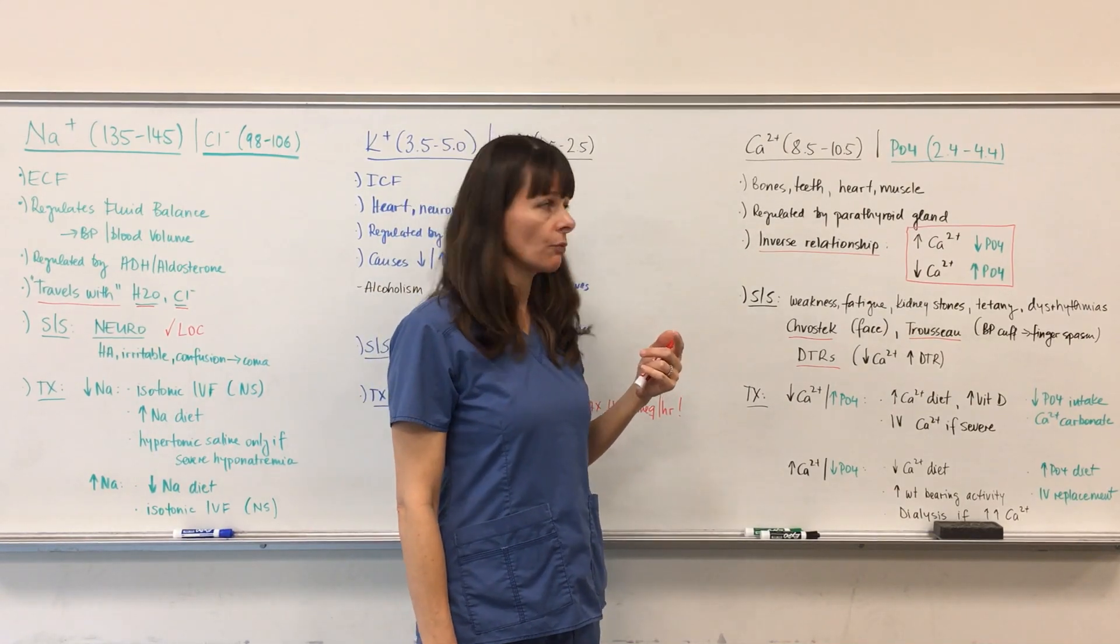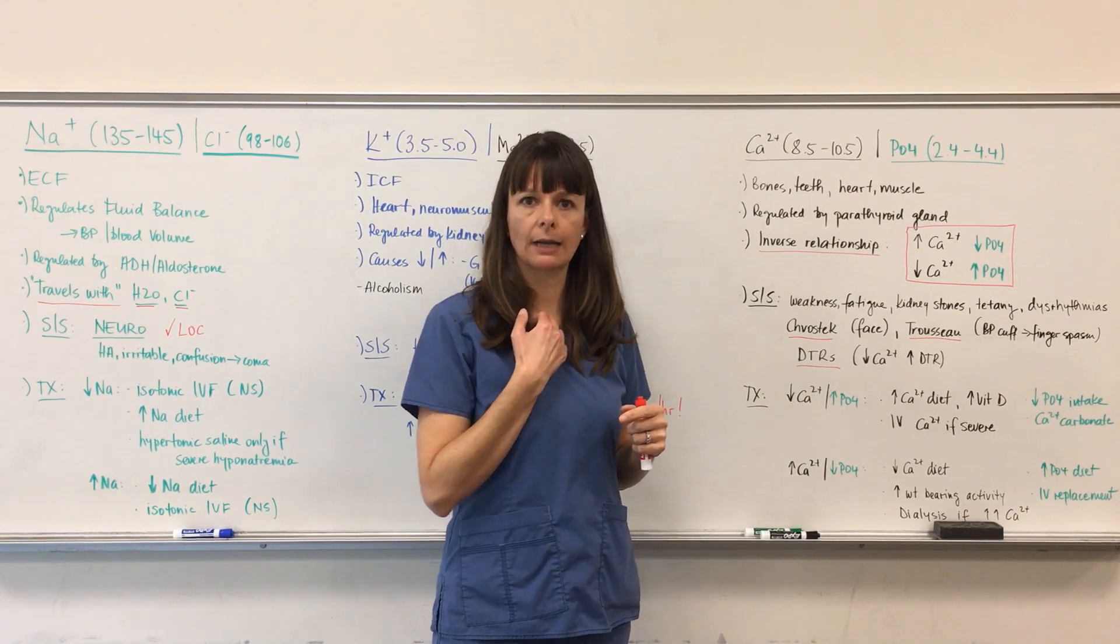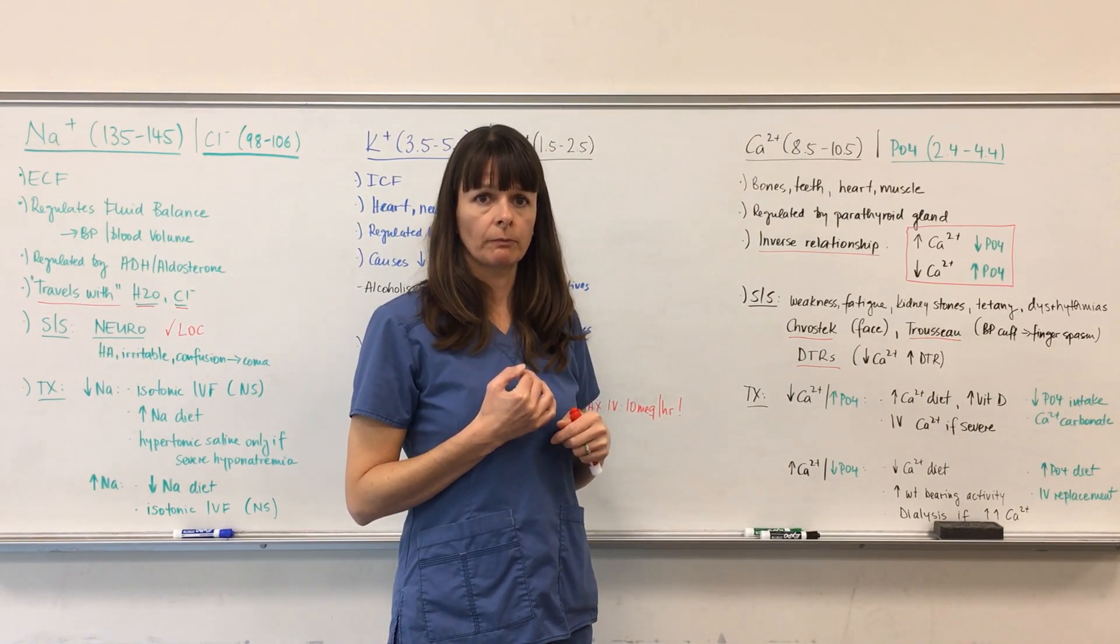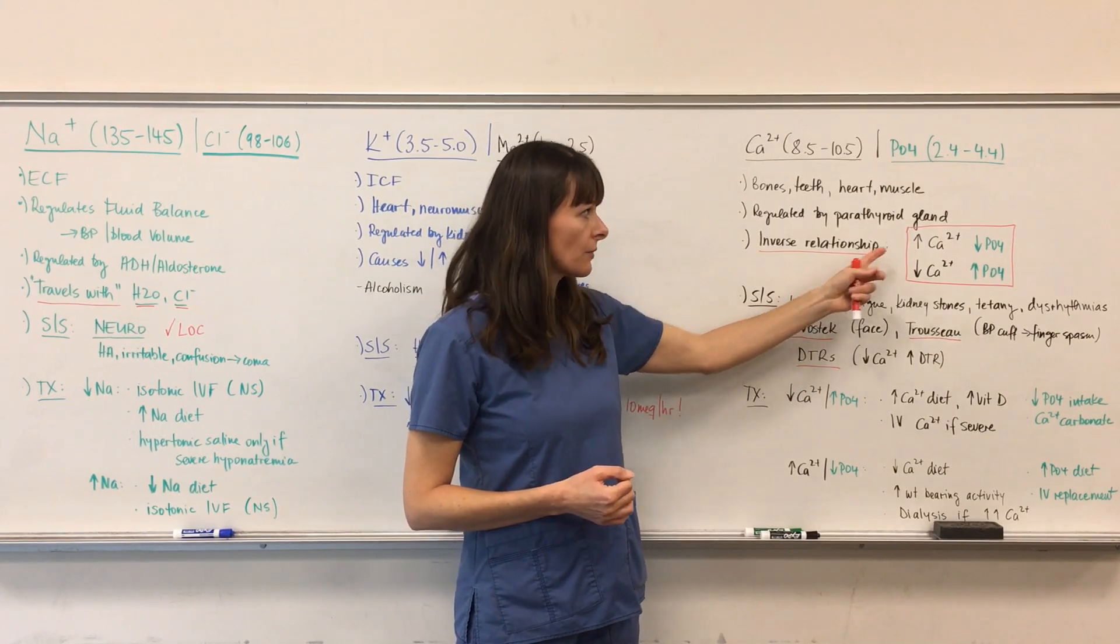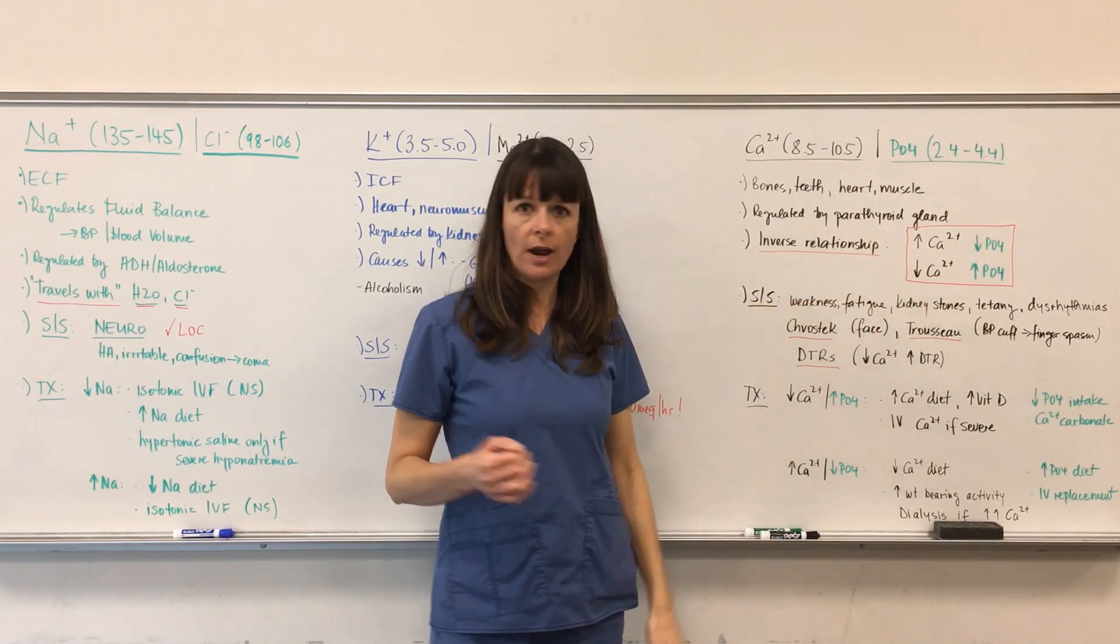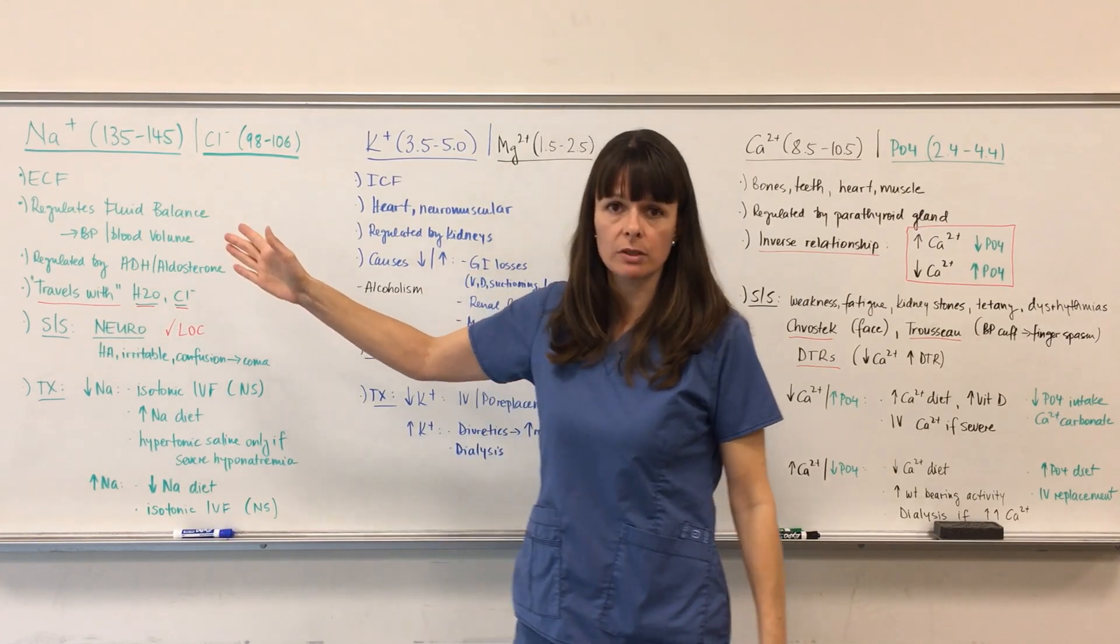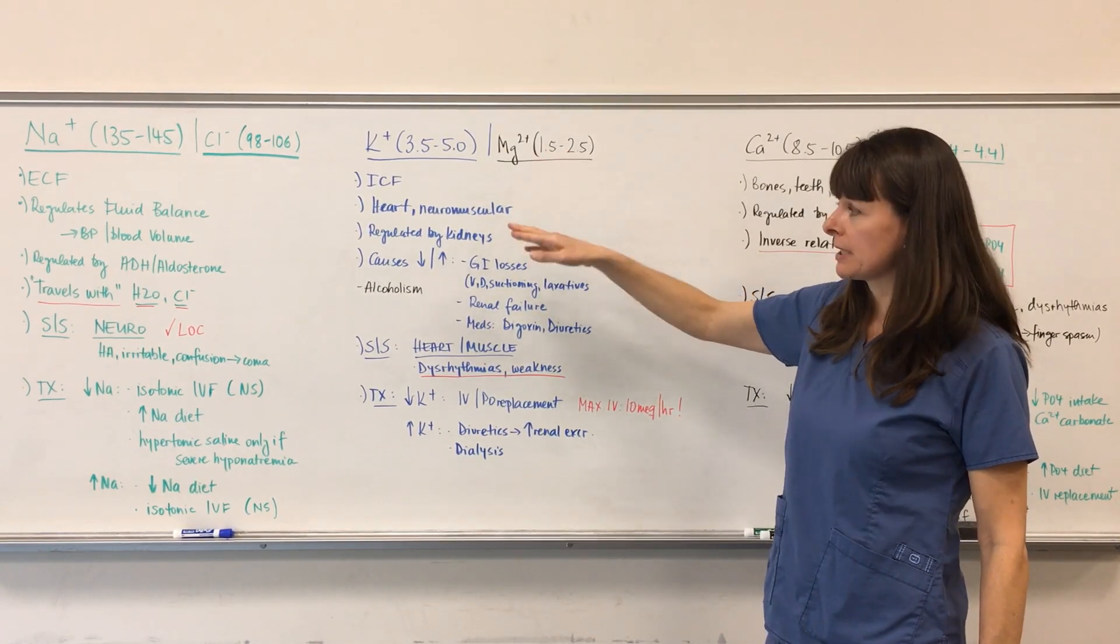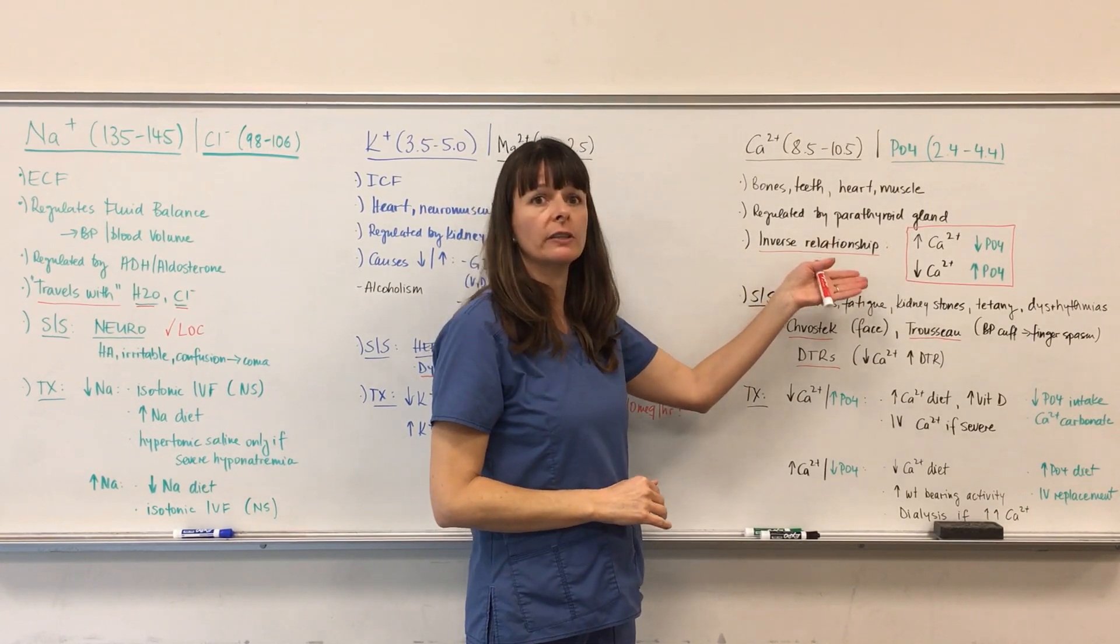Calcium and phosphate balance are regulated by the parathyroid gland, which are four small glands that sit behind the thyroid gland in front of the neck. The parathyroid gland's function is to balance calcium and phosphate in the body. Important to note here that calcium and phosphate have an inverse relationship. If calcium is high, phosphate will be low. If calcium is low, phosphate will be high. This is in contrast to sodium and chloride, which travel the same direction, and potassium and magnesium, which also travel together. Calcium and phosphate have this inverse relationship, so they basically travel the opposite direction.